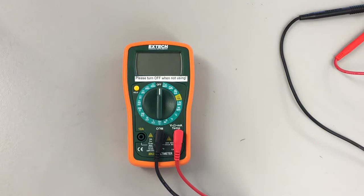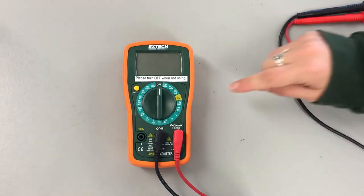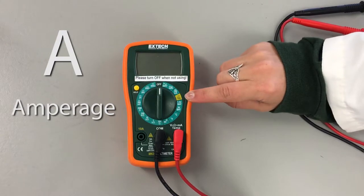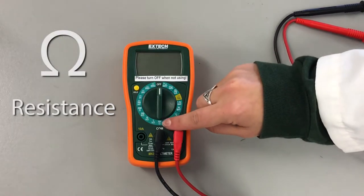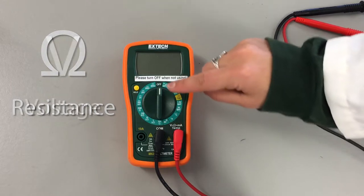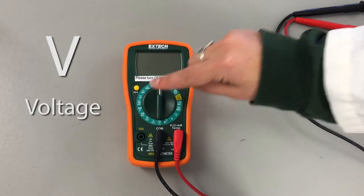The dial shows the different measurements you can take. These include current or amperage shown here by a capital A, resistance shown by an omega symbol representing ohms, and voltage shown by a capital V for volts.